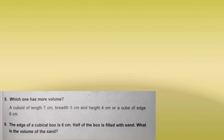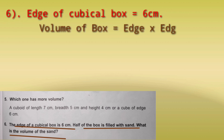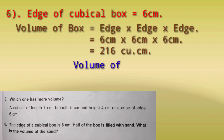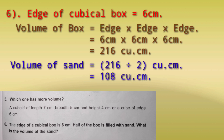The edge of a cubical box is 6 cm. The volume of the cube is 6 x 6 x 6 = 216 cubic centimeters — that is the whole box's volume. Now, half of the box is filled with sand. So the volume of sand = 216 divided by 2 = 108 cubic centimeters.